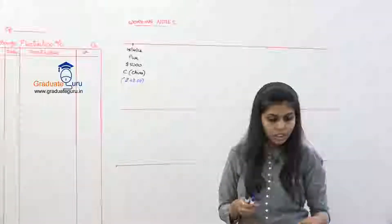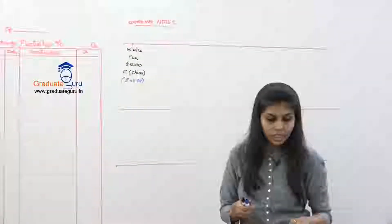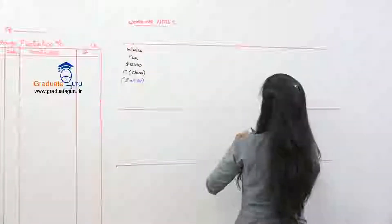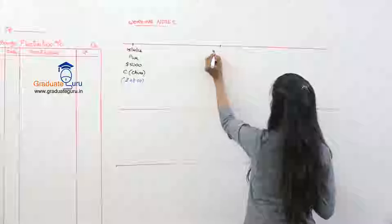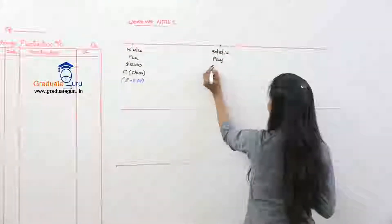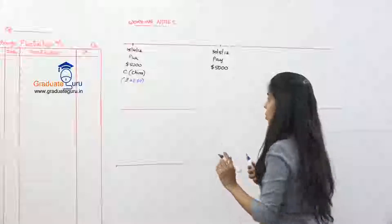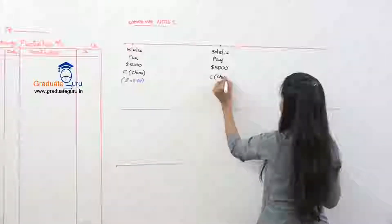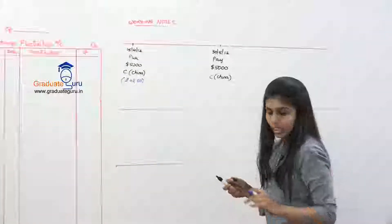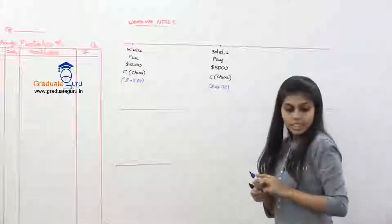Payment is made on 30th May 2012 when the exchange rate is 1 dollar = rupees 48.90. So on 30th May 2012 we are making the payment of the full 5000 dollars to Sea of China. No part payment has been mentioned, so we assume full payment. The exchange rate at payment is 48.90.